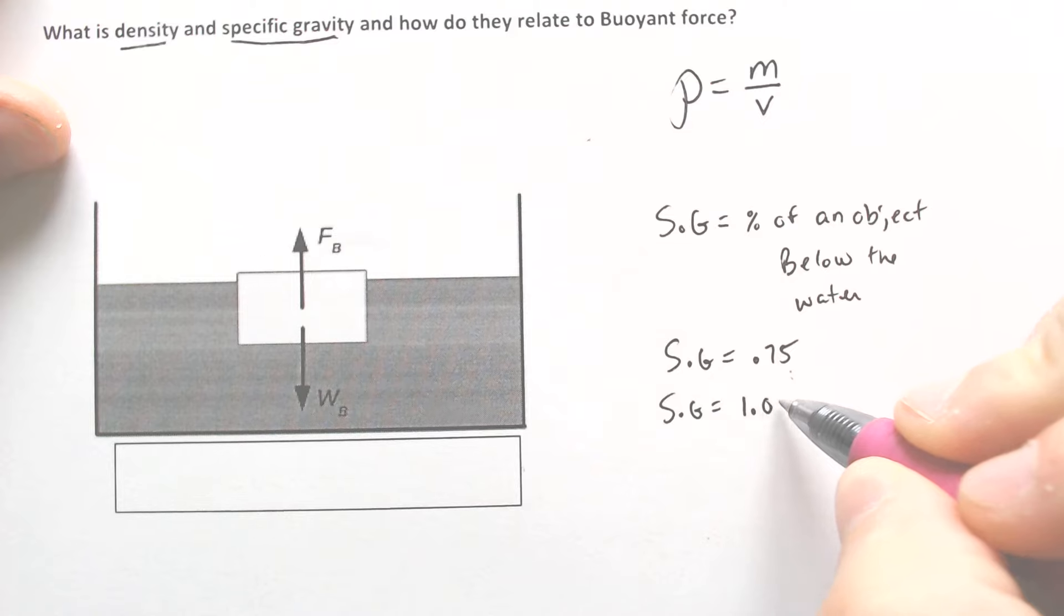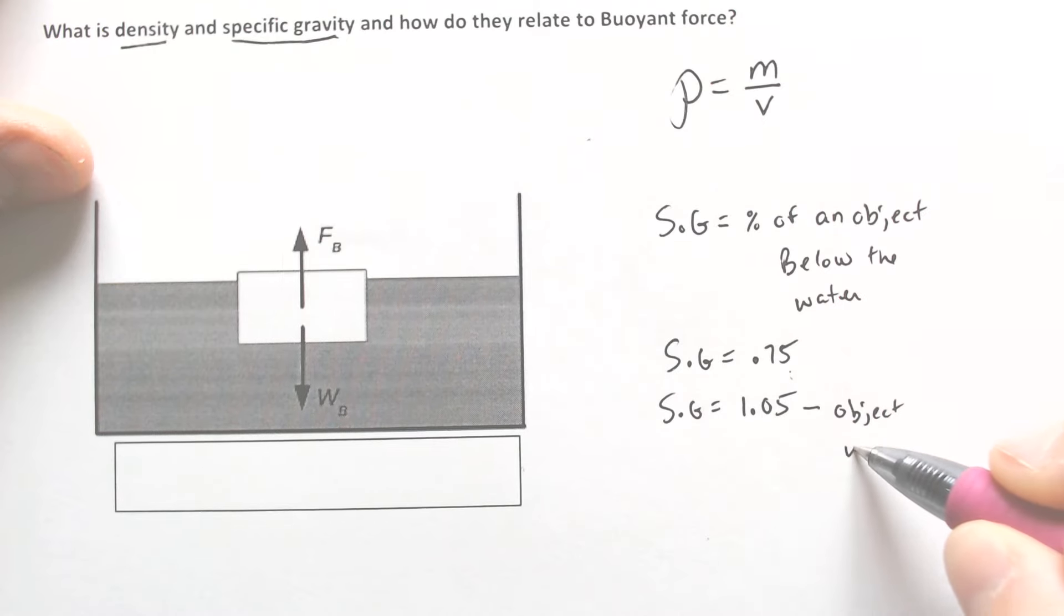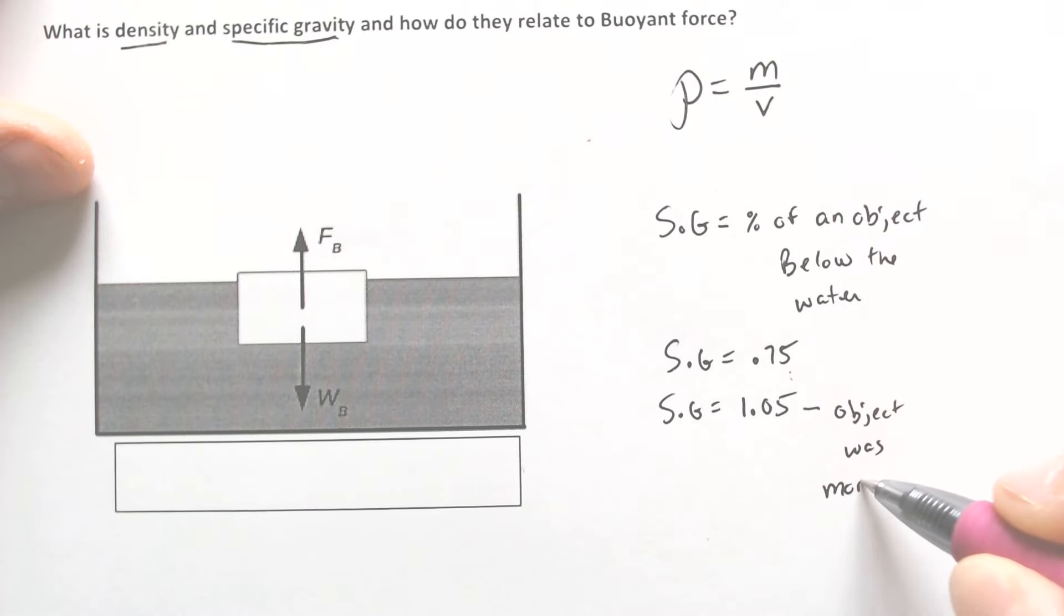Versus if you have a specific gravity that is 1.05, that means that the object that you had that was in the water was more dense than the water. And if it's more dense than the water, it will sink.